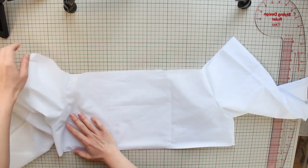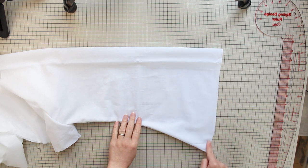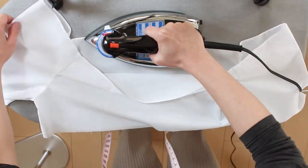At the top edge and end of the sleeves, do a narrow rolled hem with a 5 millimeter or a quarter of an inch seam allowance and press all seams here so it's nice and crisp.